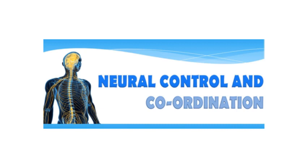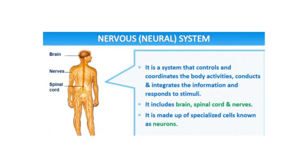Hello students. Let us start with our next chapter of biology, that is neural control and coordination. Let us first try and understand what is the nervous system. The nervous system is a system which controls and coordinates all the activity of your body — whether you are talking, walking, sleeping — everything is controlled by the nervous system. It also conducts and integrates the information and responds to stimuli.